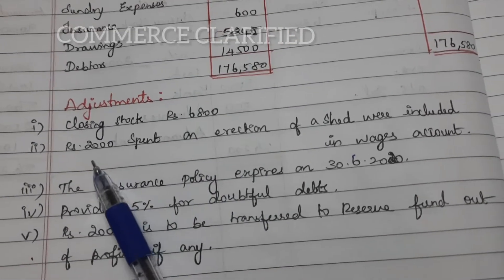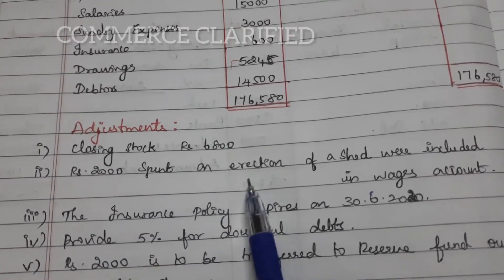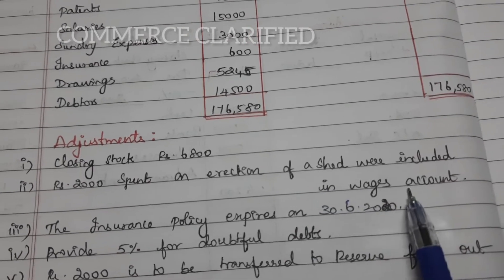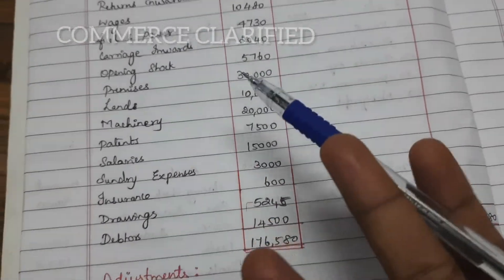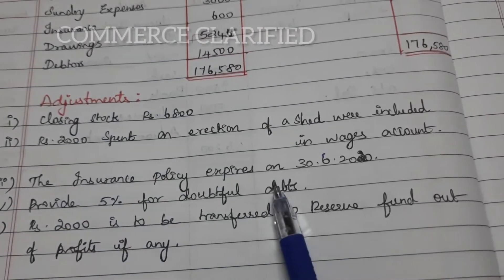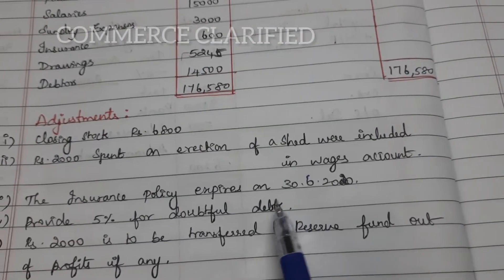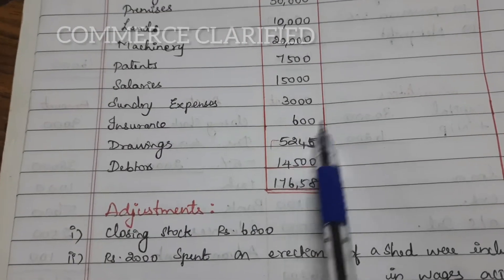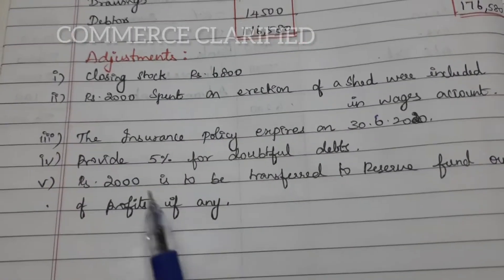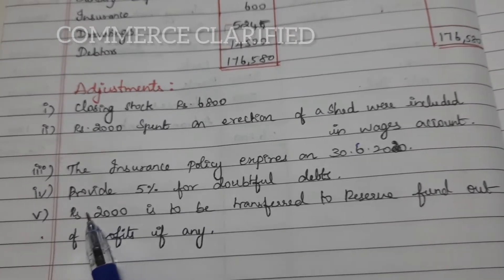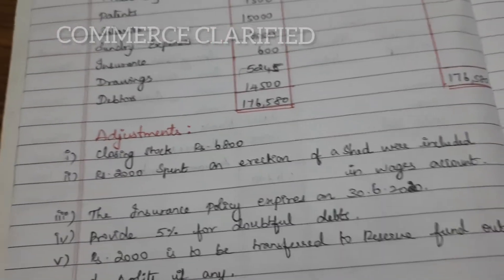The adjustments are as follows: Closing stock is 6,800. 2,000 spent on erection of a shed were included in wages account — erection means fixing charges for a shed, which should be included under premises/building. The insurance policy expires on 3rd June 2020. The year-end closing is 2019, so insurance was paid 6 months in advance — 600 is the advance for 6 months. Provide 5% for doubtful debts on sundry debtors. 2,000 is to be transferred to reserve fund out of profits, if any — so from net profit, 2,000 will be set aside to reserve fund.